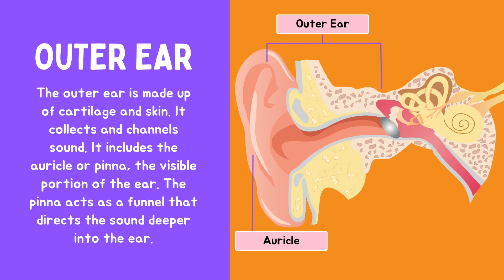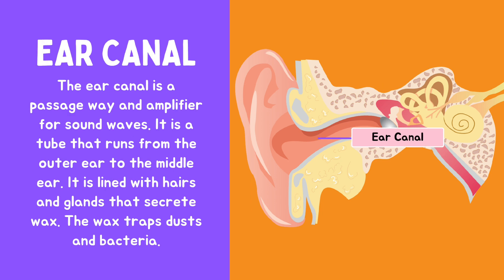The ear canal is a passageway and amplifier for sound waves. It is a tube that runs from the outer ear to the middle ear. It is lined with hairs and glands that secrete wax.